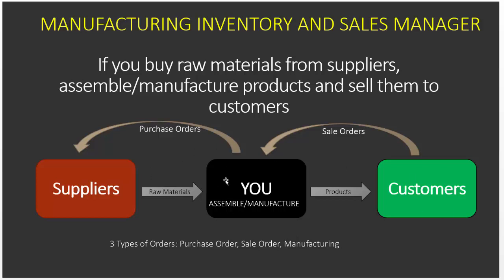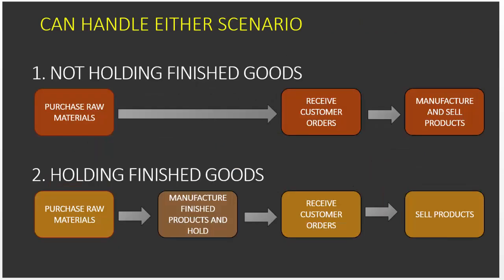There are two types of scenarios even within the manufacturing environment. The first is where you're not holding finished goods — you purchase raw materials and then wait until you receive customer orders. Once you receive the orders, you immediately manufacture or assemble and then sell the products.